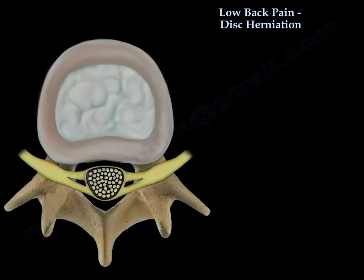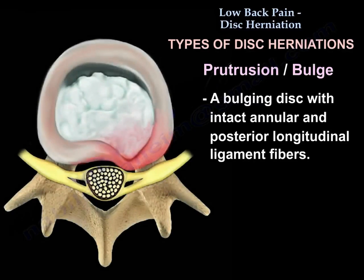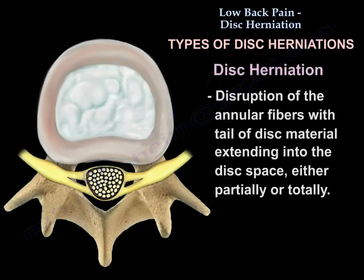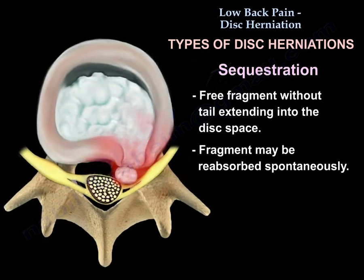There are three types of disc herniation. The first is protrusion or bulge — a bulging disc with intact annular and posterior longitudinal ligament fibers, which is a small disc bulge. The second type is disruption of the annular fibers, with a tail of disc material extending into the disc space, either partially or totally. The third type is a sequestered disc — a free fragment with no tail extending into the disc space; the fragment may be reabsorbed spontaneously.